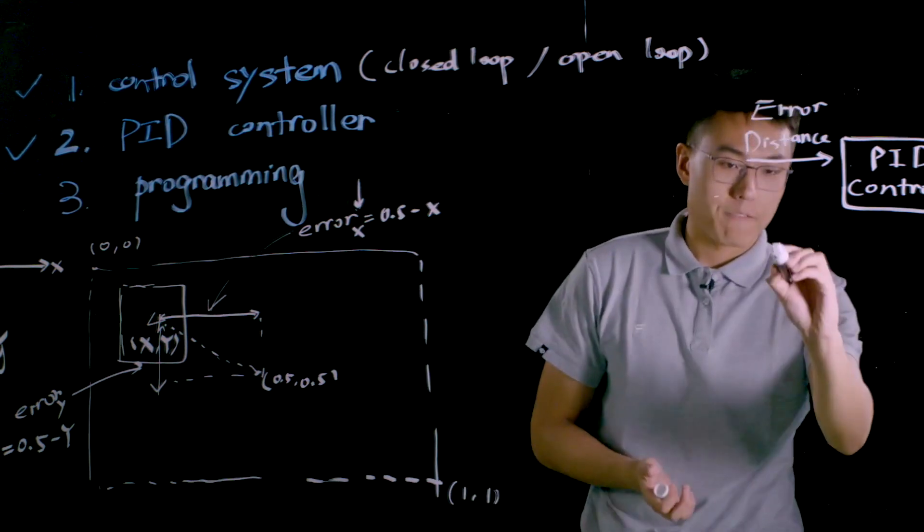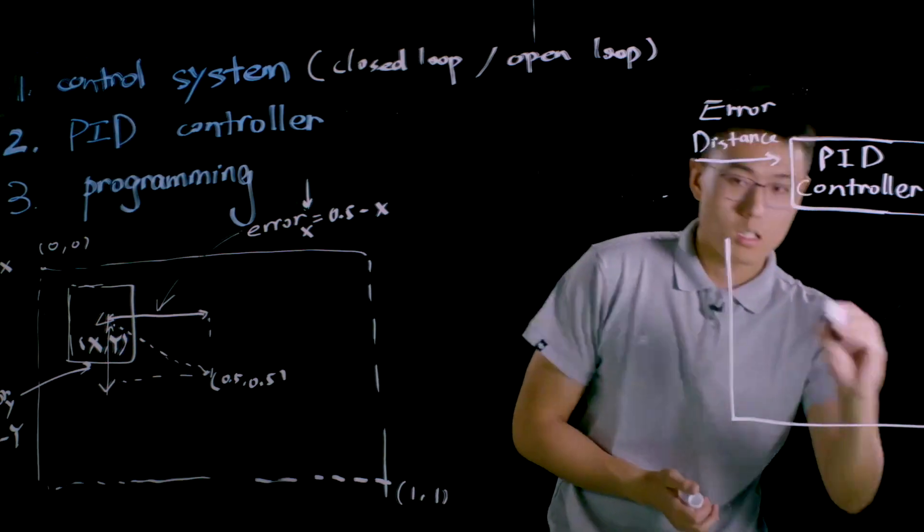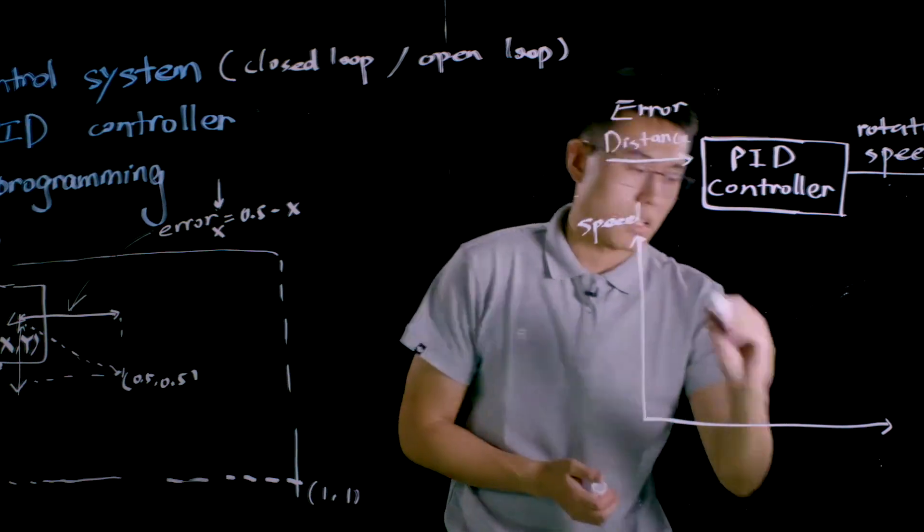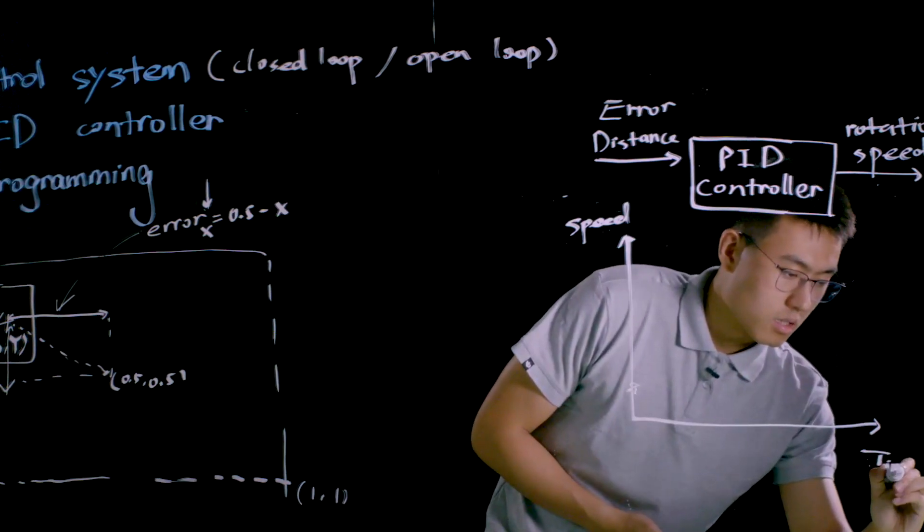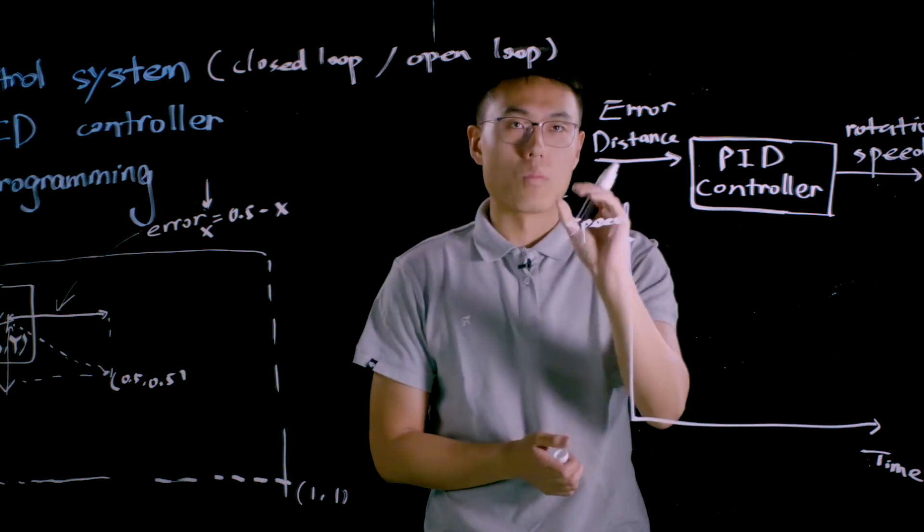So first of all, we need to draw a graph of speed versus time. So this speed is actually the rotational speed of the motor on yaw axis.